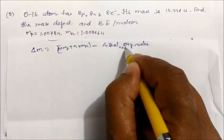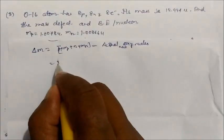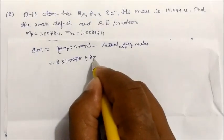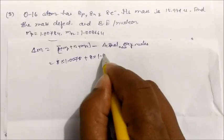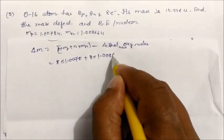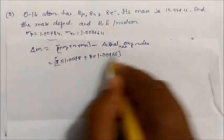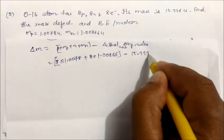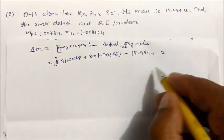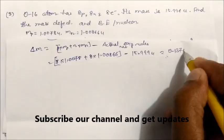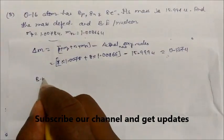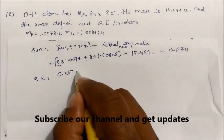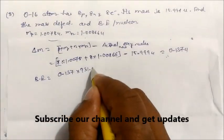We use the mass of the oxygen nucleus. Substituting: 8 × 1.0078 (proton) + 8 × 1.0086 (neutron) − 15.994 u. On solving you will get 0.137 u for the mass defect. The binding energy is then 0.137 u × 931.5 MeV/u.